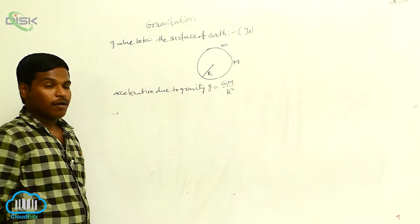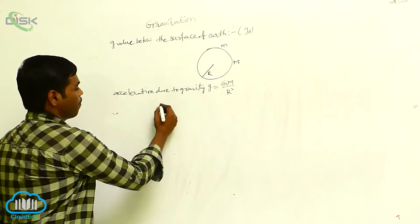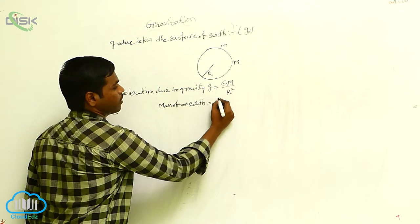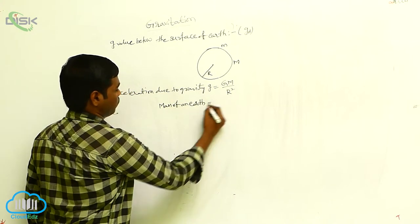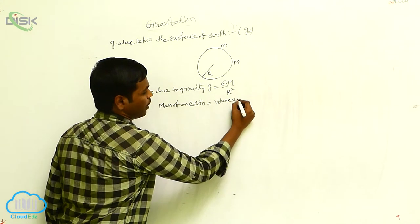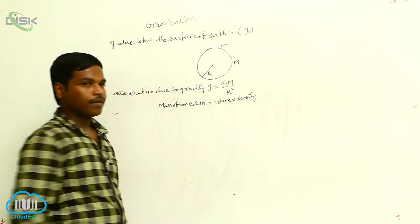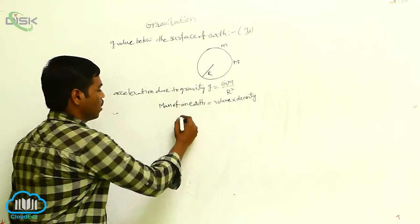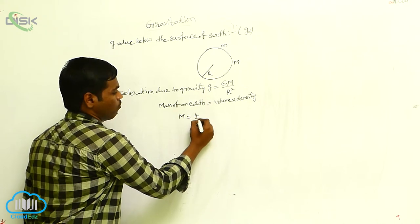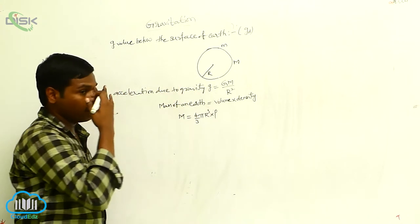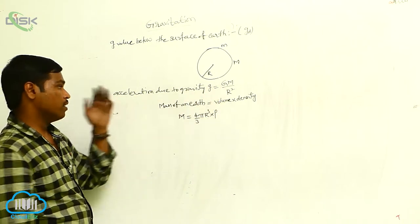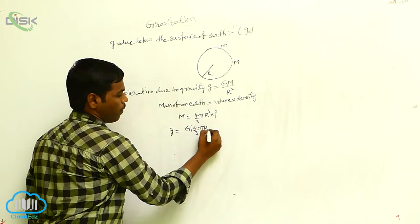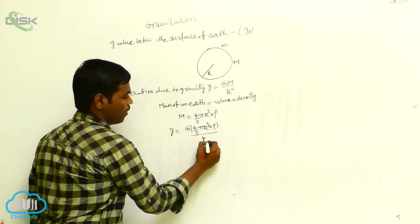The earth is in spherical shape. The mass of the earth can be written as volume of the earth times density. Taking the density of the earth as rho and volume as (4/3)πr³, the mass of the earth M equals (4/3)πr³ times rho. Substituting this into the equation, we get g equals G times (4/3)πr³ rho divided by r squared, which simplifies to g equals (4/3)π r G rho.